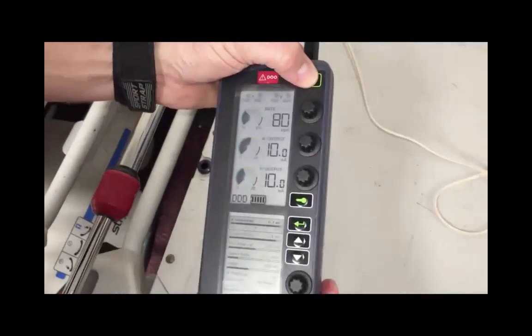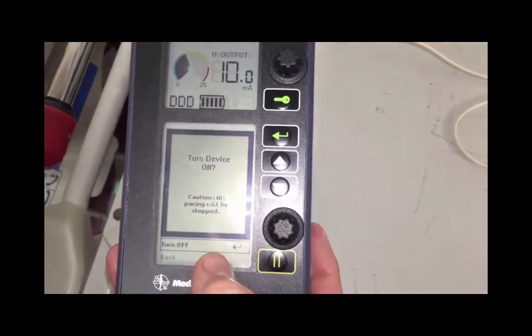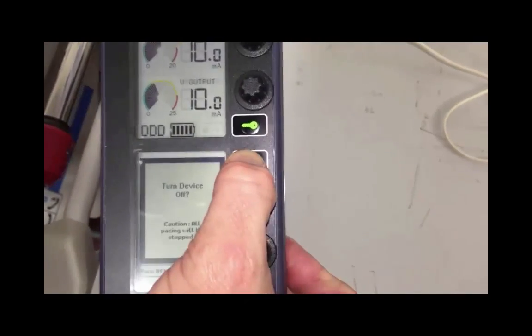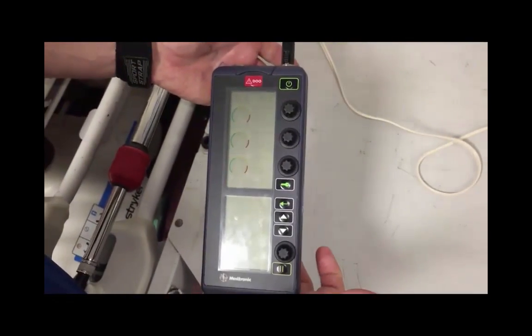In order to power the device off, simply push the power button at the top right hand corner. There is going to be a prompt to say turn device off. You hit the green arrow button at the bottom menu and the device powers off.